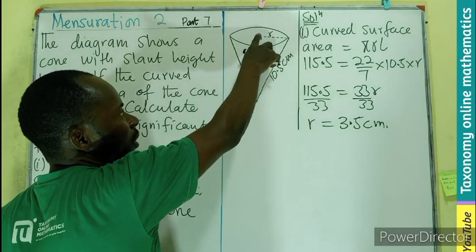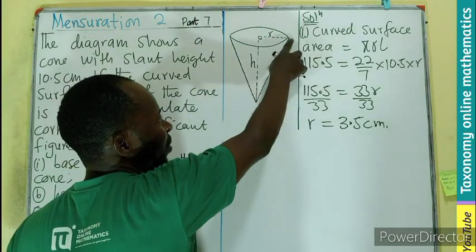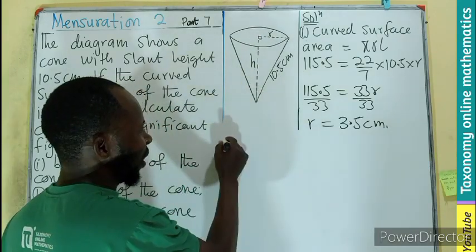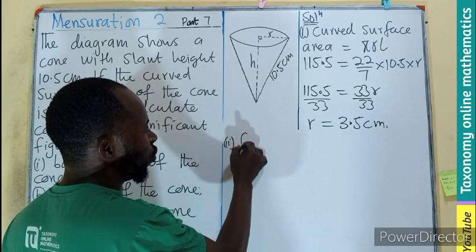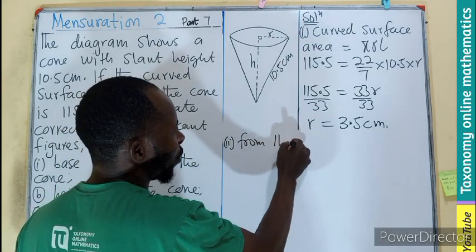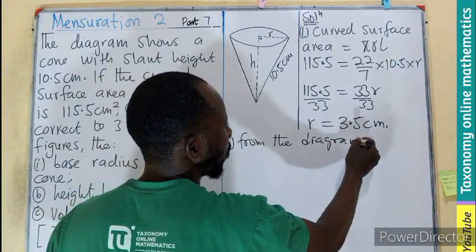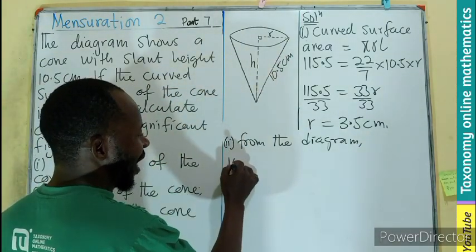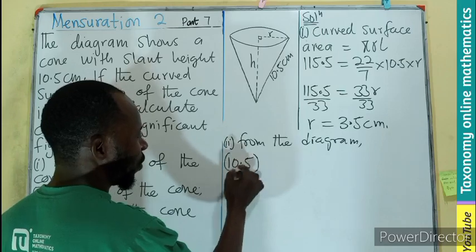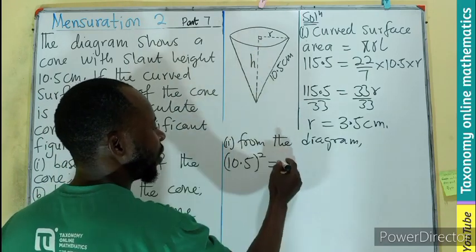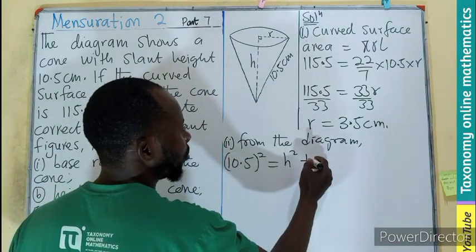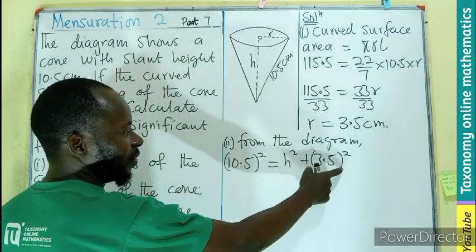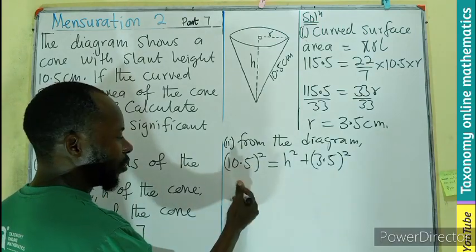The second thing is to find the height of the cone, which is forming a right angle triangle with the radius and the slant height. So we can see number two, from the diagram.